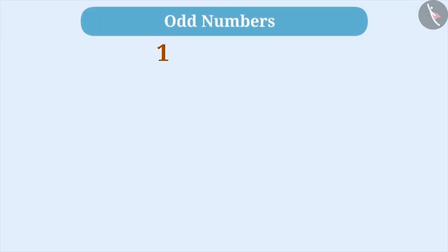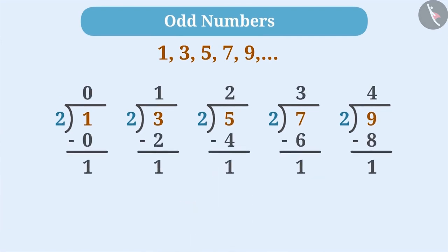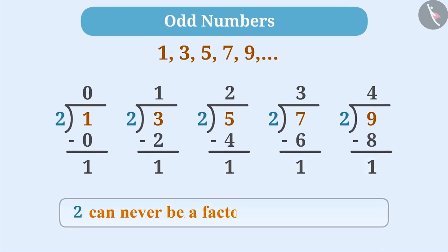Let's divide odd numbers such as 1, 3, 5, 7, 9, etc. by 2. Do you always get 0 as remainder? No, upon dividing odd numbers by 2, we never get 0 as remainder. 2 can never be a factor of an odd number.